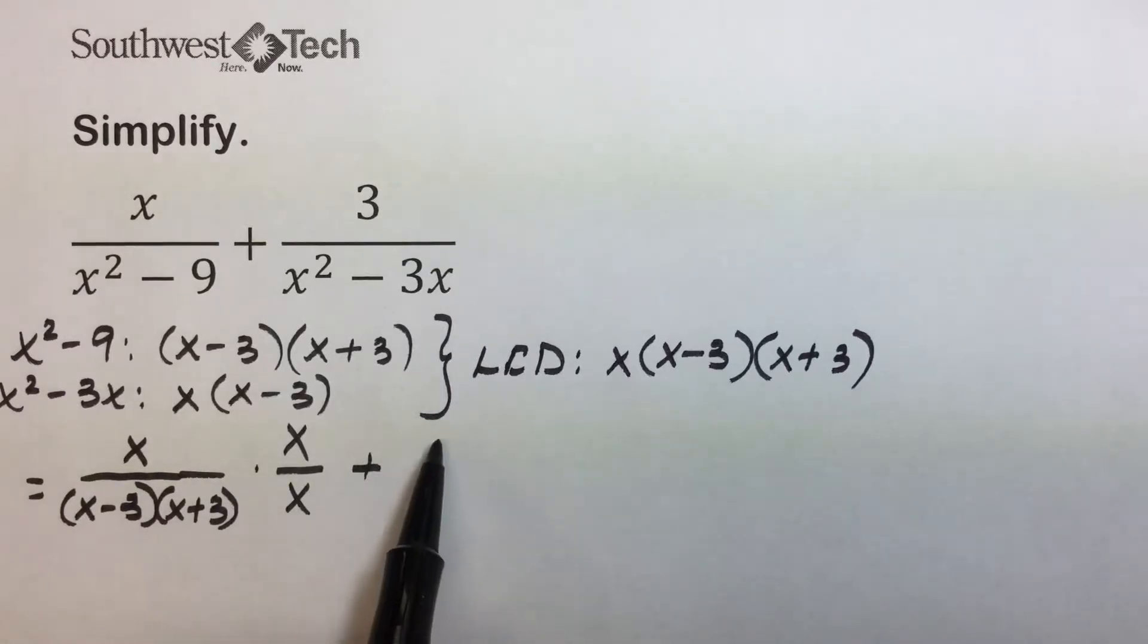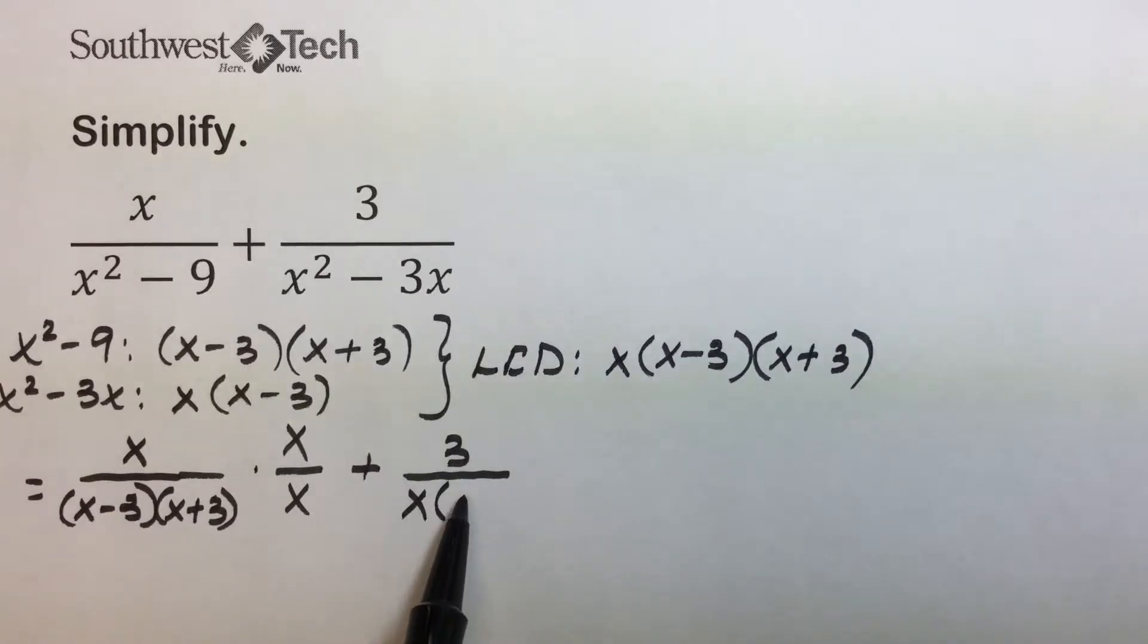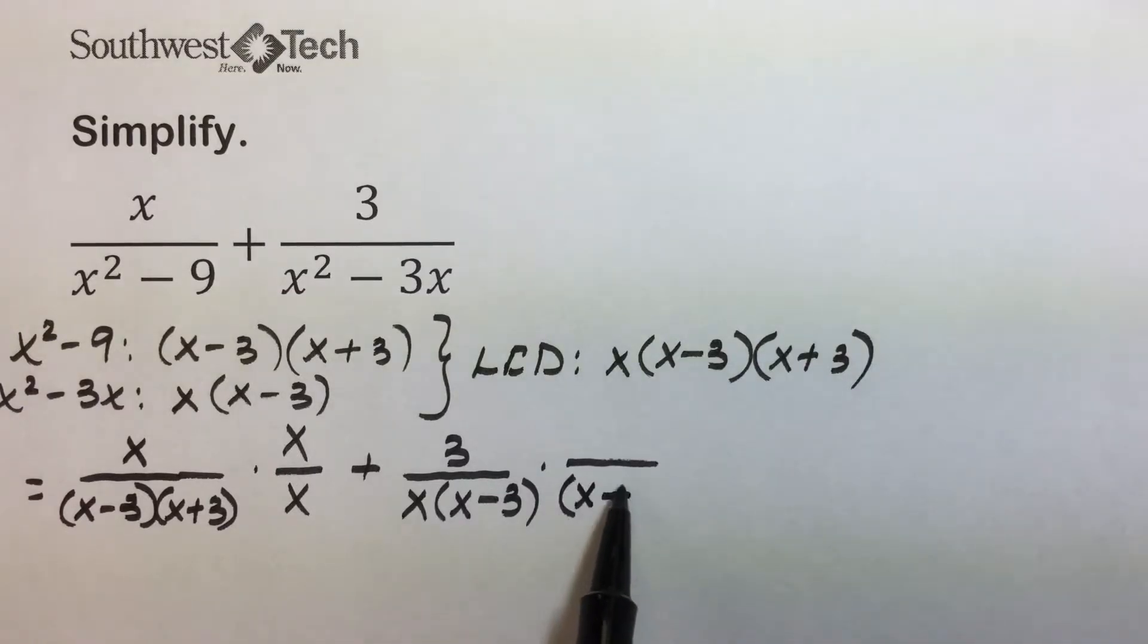Next we move to the next rational expression, and again replacing the denominator with its factored form. We see that we are missing the x plus 3 from the least common denominator here, so putting that same value over itself is the same as multiplying by 1.